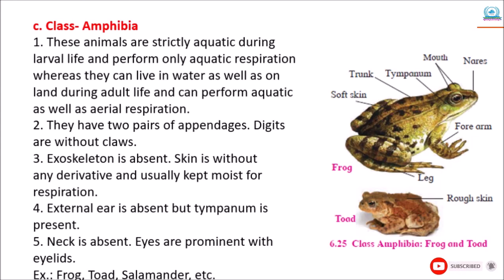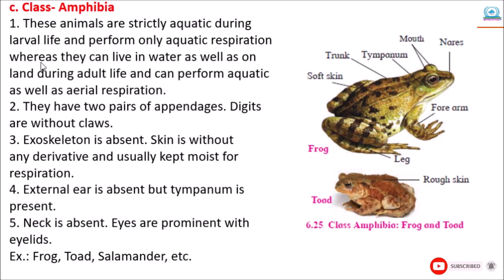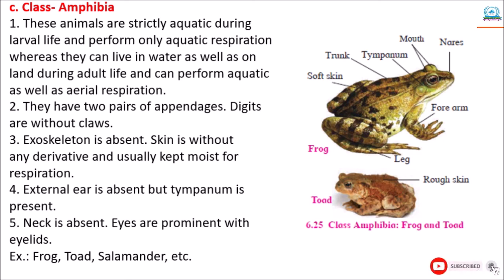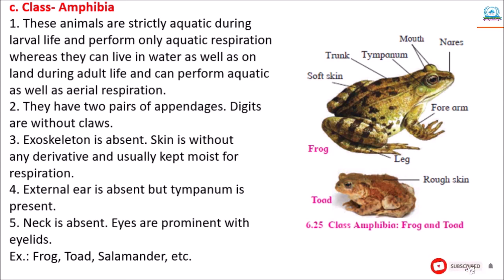Next class is Amphibia. These animals are strictly aquatic during larval life and perform only aquatic respiration. Whereas they can live in water as well as on land during adult life and can perform both aquatic and aerial respiration. Exoskeleton is absent, skin is without any derivatives and usually kept moist for respiration. External ear is absent but tympanum is present. Neck is absent, and eyes are prominent with eyelids. Examples: frog, toad, salamander, etc.